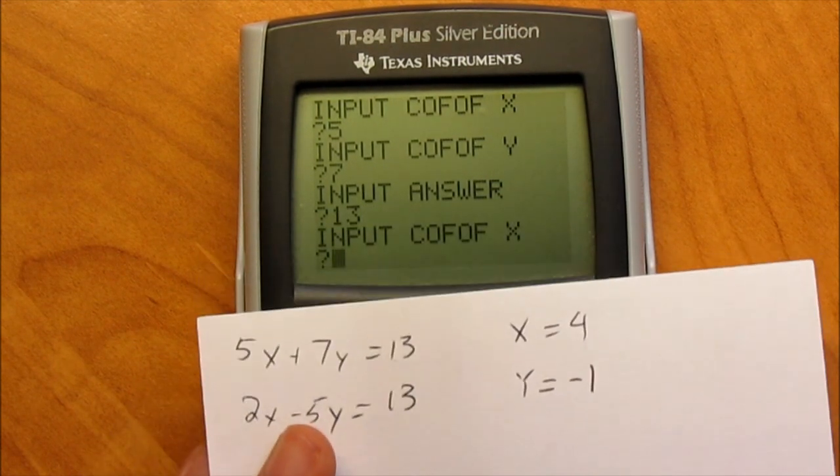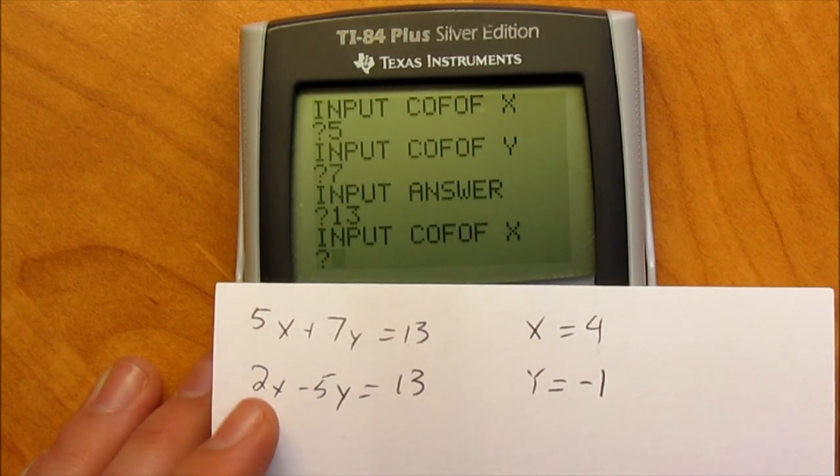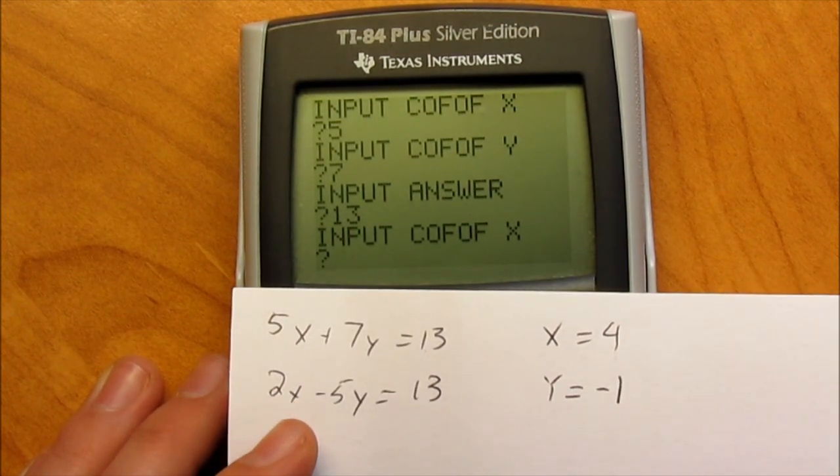Hit enter. Alright, so now it says input coefficient of x. That means that you should put the second line. So in this case, it's 2.